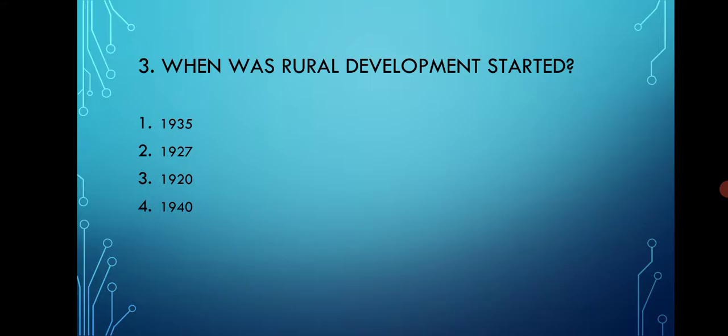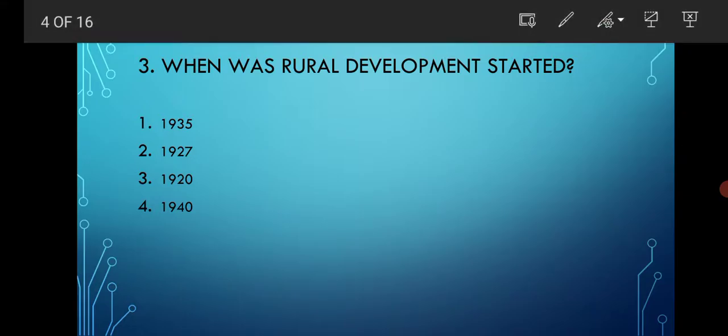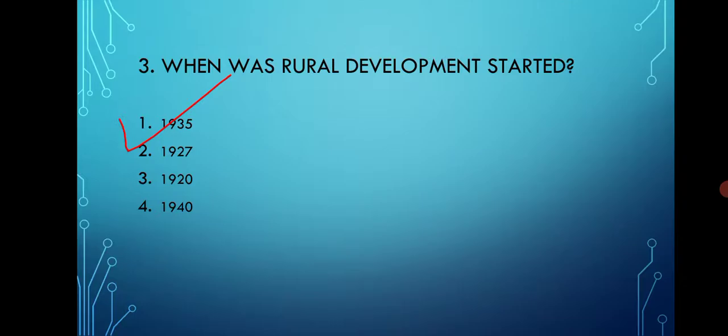When was rural development started? The options are 1935, 1927, 1920, and 1940. The correct option is option number one, that is 1935.